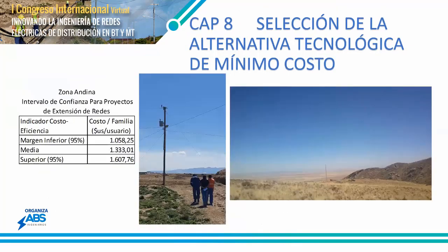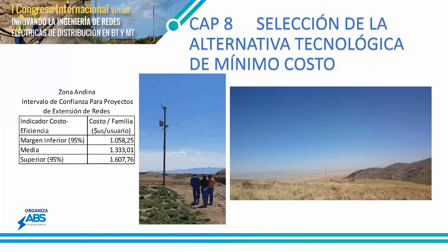Tenemos algunos indicadores de costo-eficiencia para la elaboración de proyectos de electrificación rural. Por ejemplo, en el área andina o el altiplano, se puede usar un margen inferior al 95% con un intervalo de costo-beneficio por familia de mil dólares. Lo que hace el proyectista es sacar el número de usuarios, la cantidad de materiales y cuánto le cuesta por kilómetro. Si el costo por usuario está en el margen superior de mil seiscientos dólares, el proyecto es viable — considerando la topología de la comunidad o del área de influencia para la zona andina.